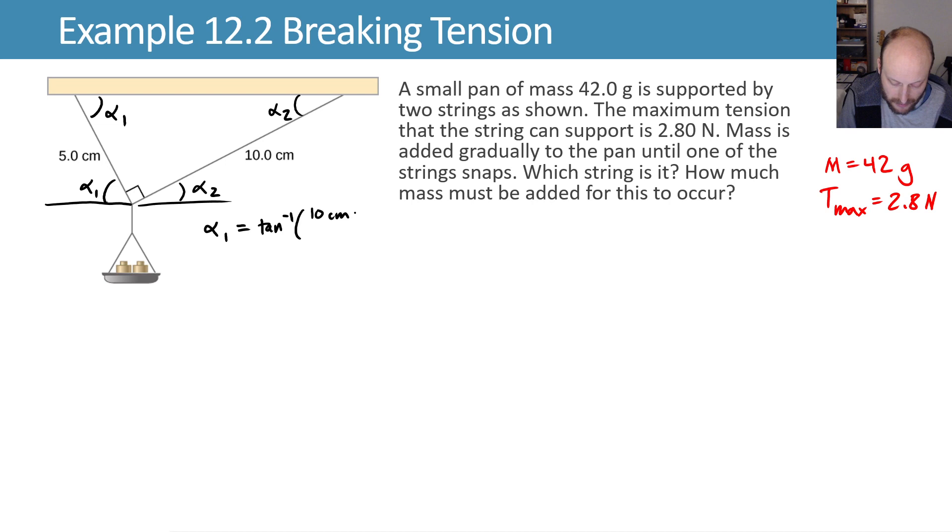So alpha 1 is equal to the inverse tangent of the opposite over the adjacent side, which is 10 centimeters over 5 centimeters or 63.435 degrees.